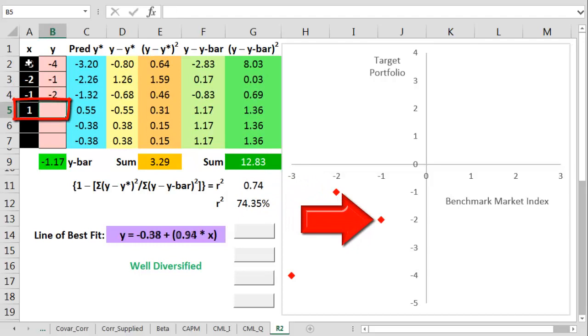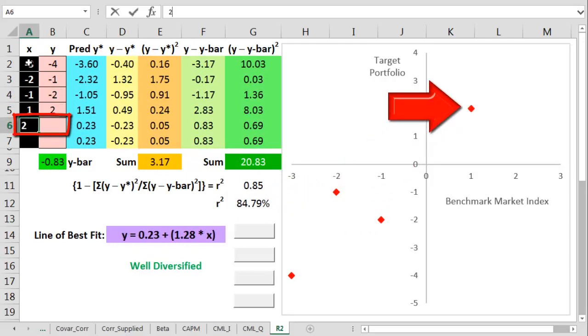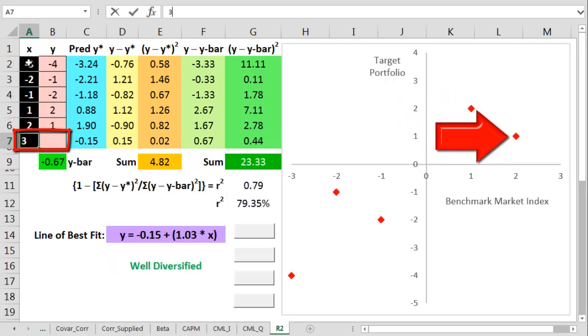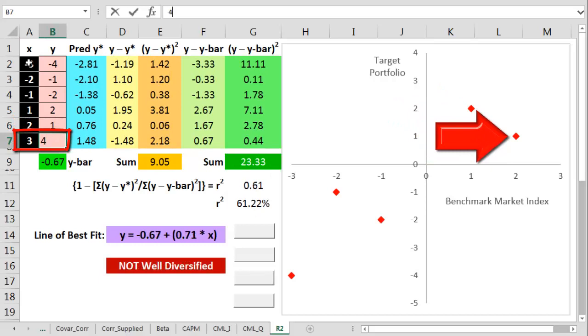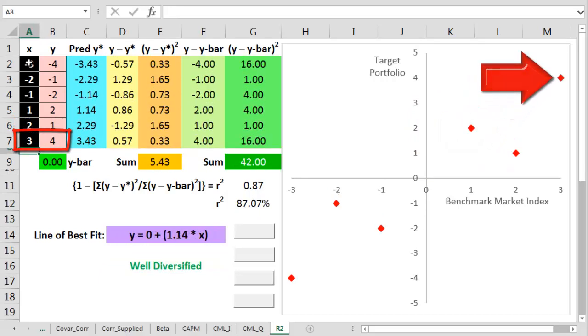For an x of 1, we get a y of 2. For an x of 2, we get a y of 1. And for the benchmark return of 3%, the target returns 4%. The next thing we need to put in is